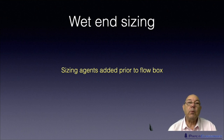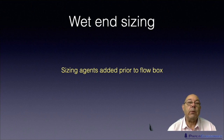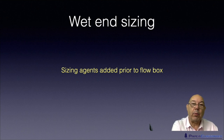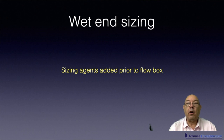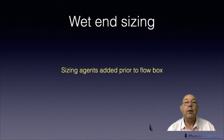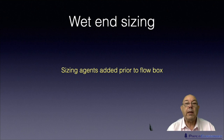When things moved on, we came to wet end sizing, which means you can put the sizing agent in anywhere in the wet end — starting right back at the hydropulper or the beater, or anywhere along the pipework, right up to putting it directly into the flow box of the machine if you wish. Putting sizing in anywhere up to and including the flow box is known as wet end sizing.